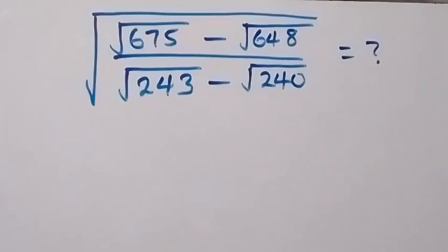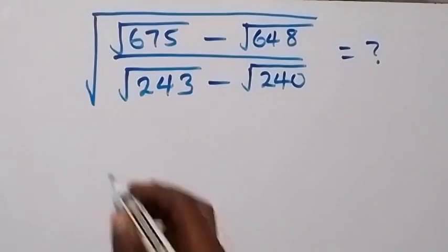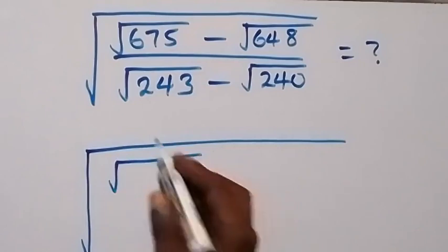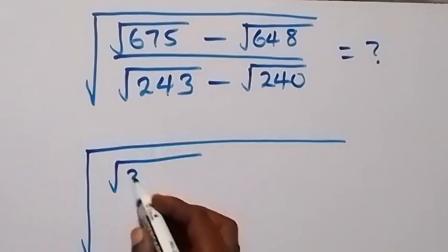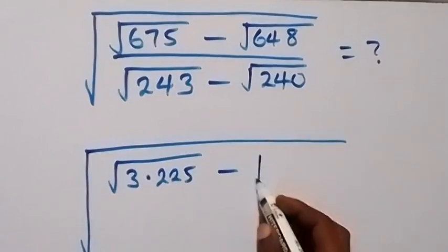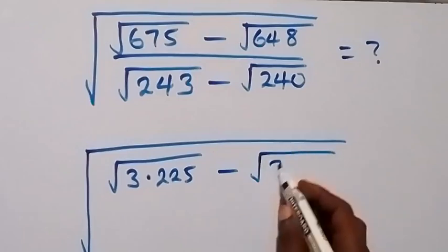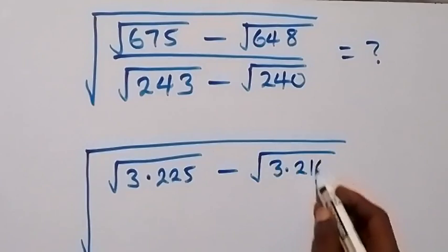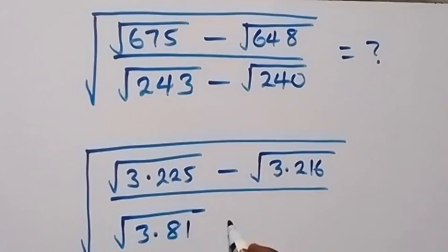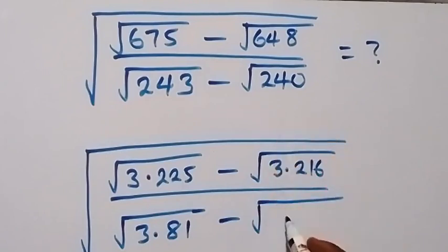Hello, you are welcome. How to solve this nice square root math problem. From here we can write this as square root of root 675 — and we can see that's 3 times 225 — then minus root 648, which we can write as 3 times 216, then divided by root 243, which we can separate as root 3 times 81, then minus root 240.